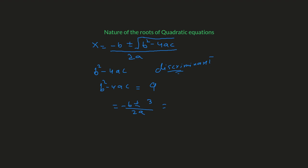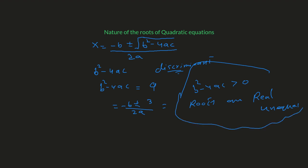So we can conclude that if b-squared minus 4ac is positive, the roots would be real and unequal. This is the first conclusion.